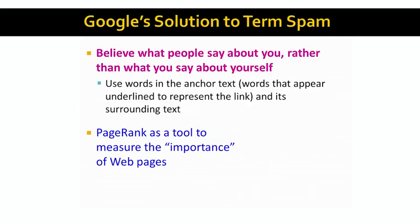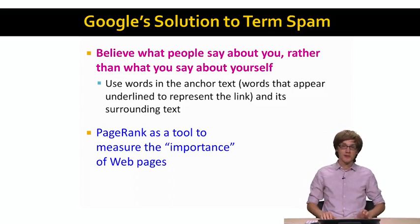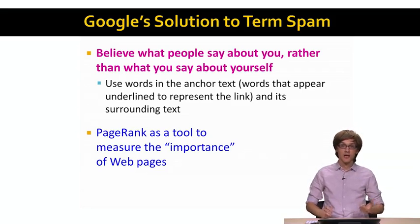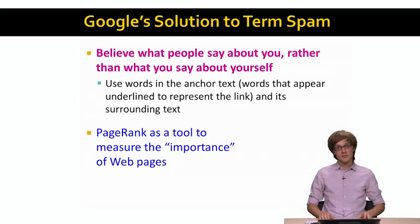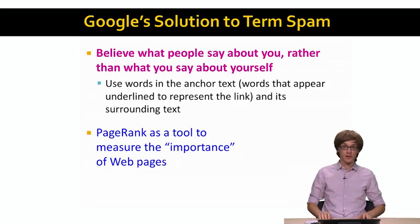So how did Google come up with a solution to combat term spam? The basic intuition is that rather than believing what the page says about itself, let's believe what other people say about the page. In our context, this means looking at the anchor text — the blue underlined hyperlink text — and asking what that text says about the page it links to. This way, we can surface web pages even for queries containing words that the web page itself doesn't even mention, but other web pages mention when referring to the target page.